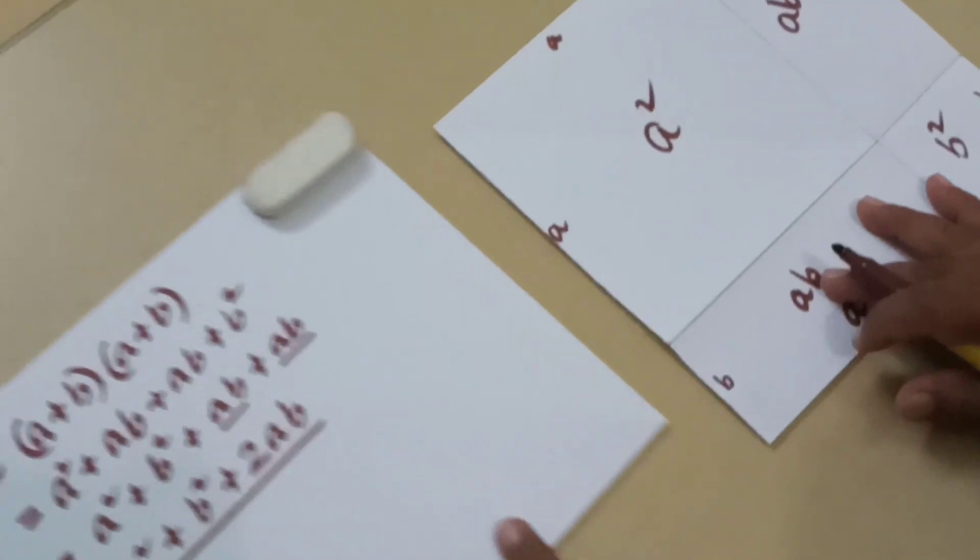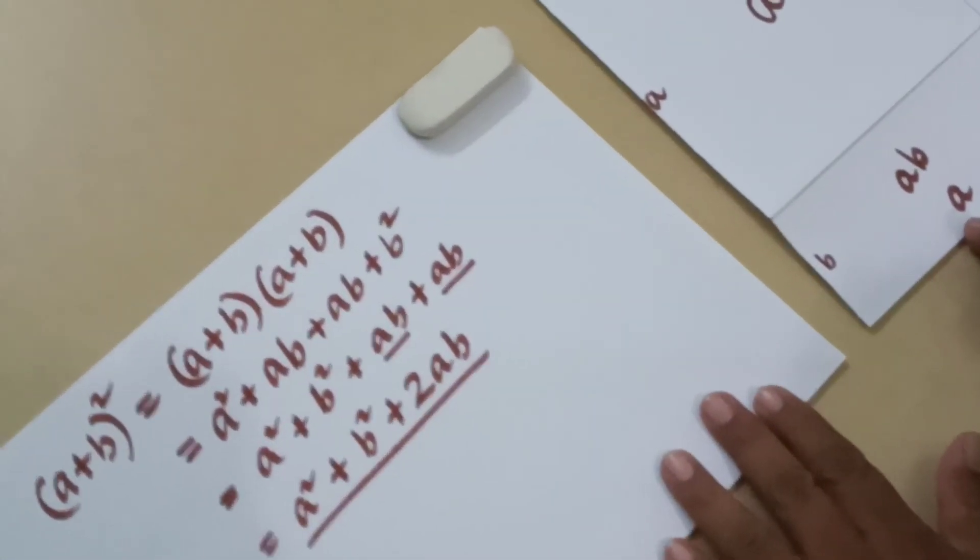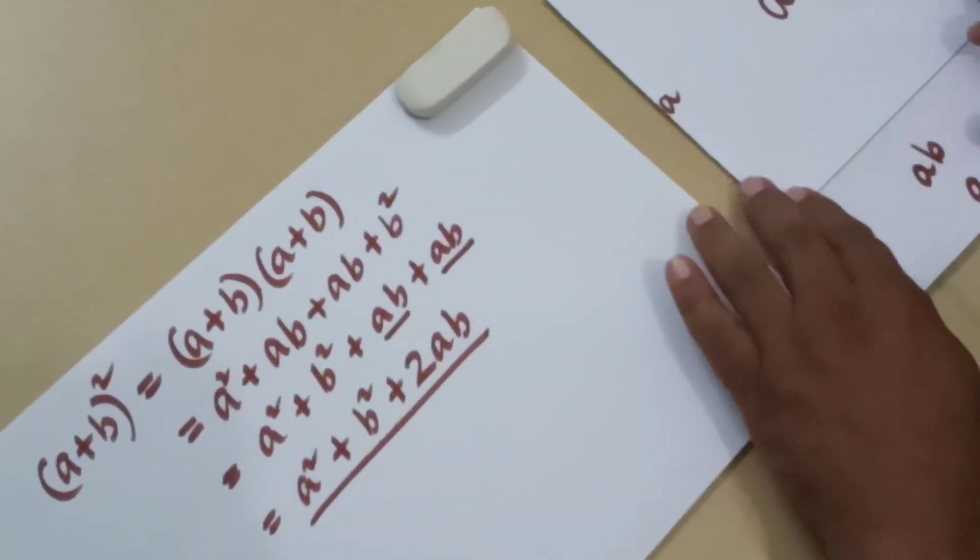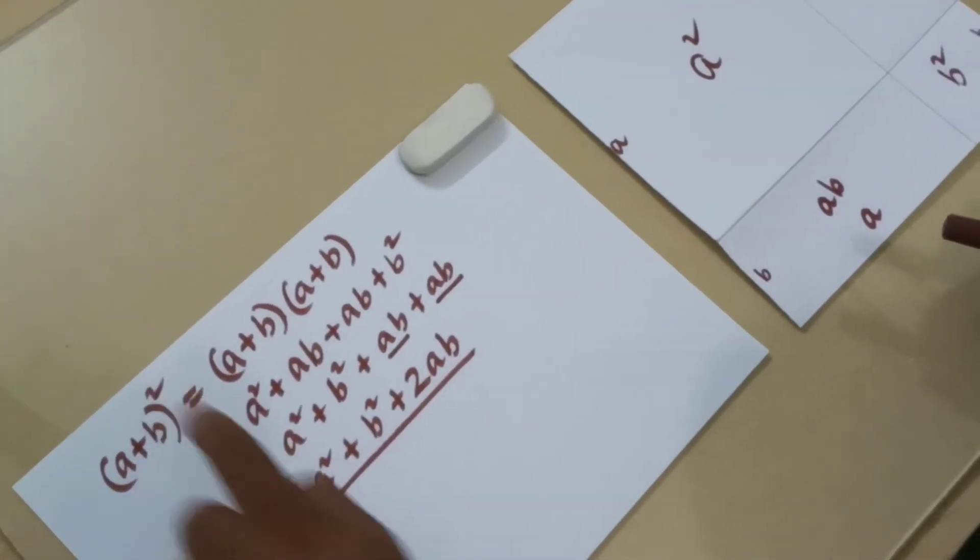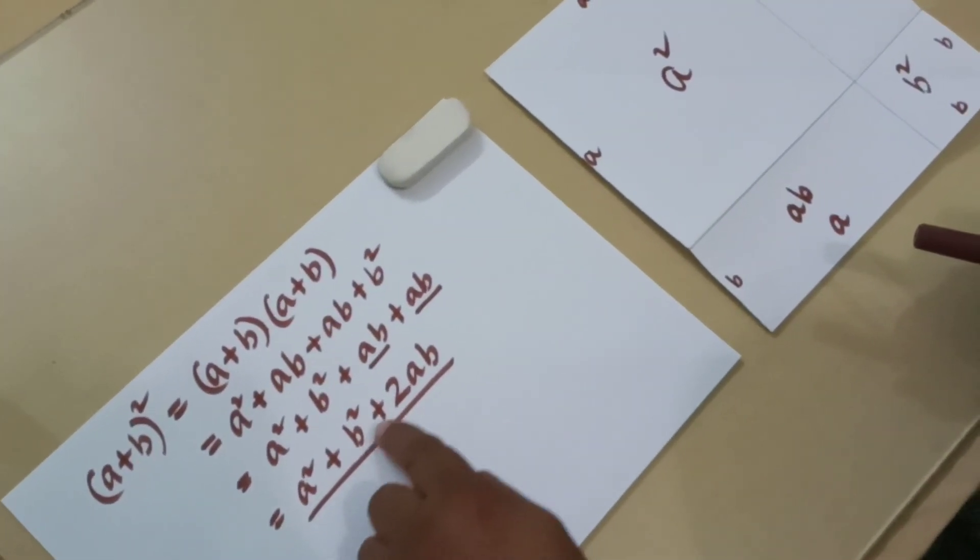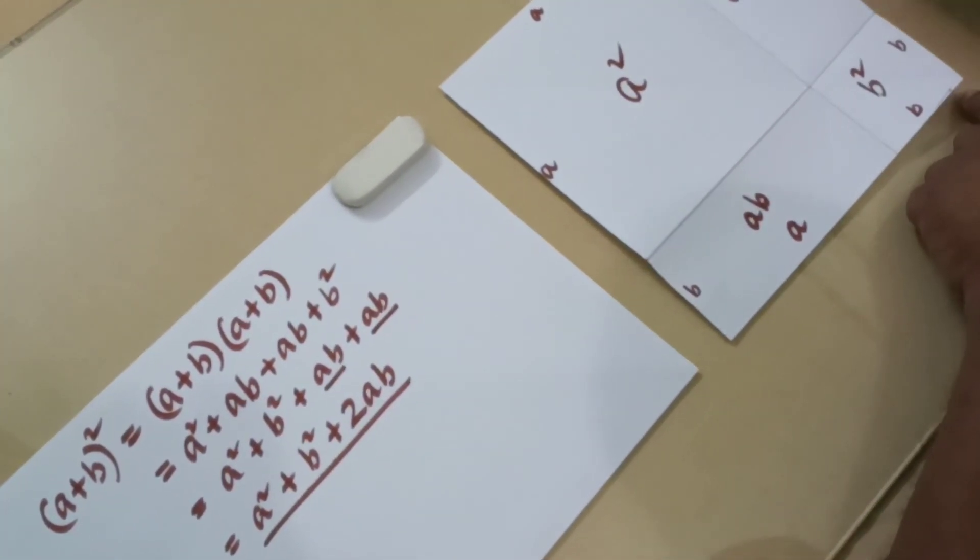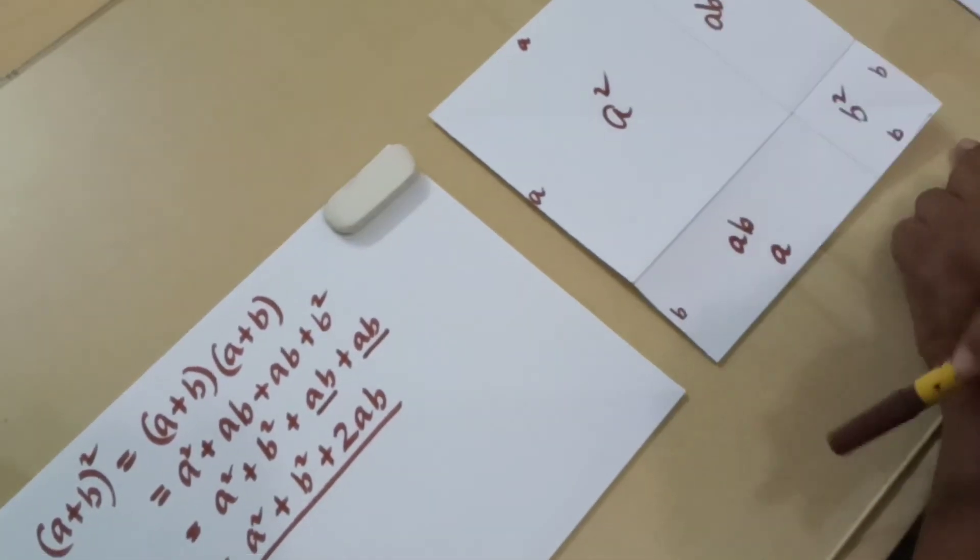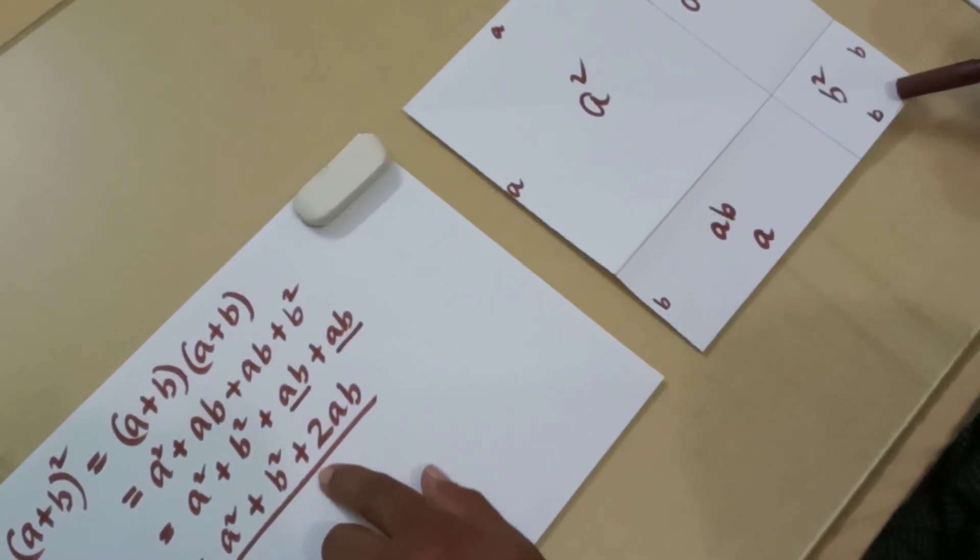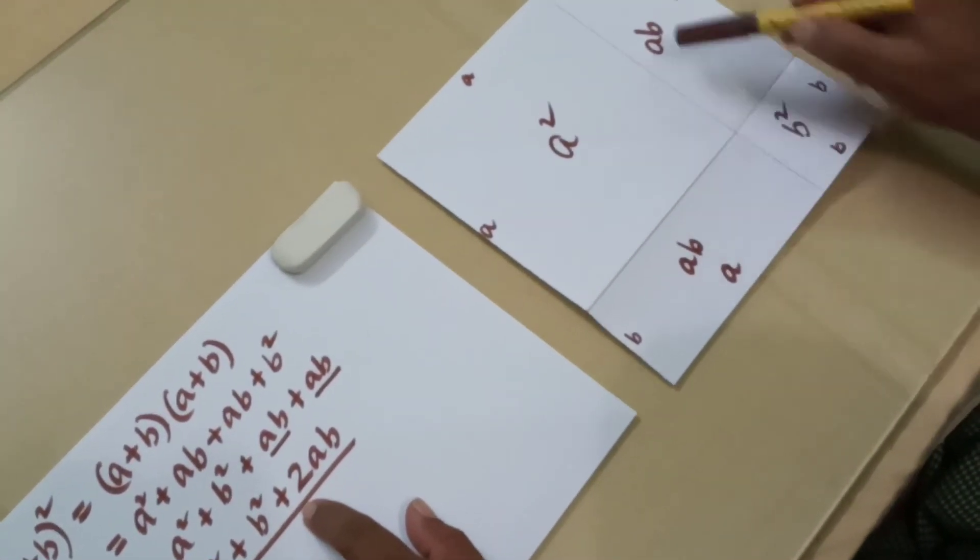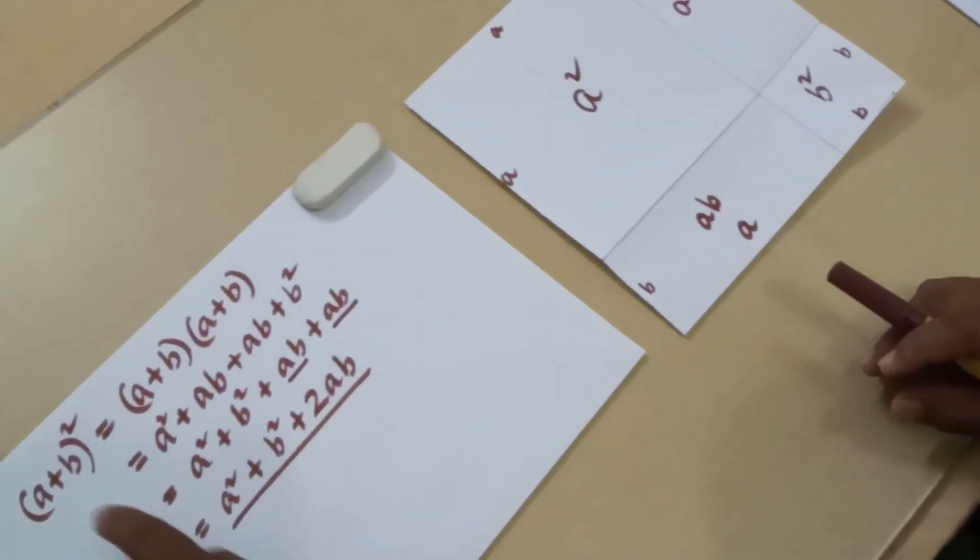So now we will go back to our a plus b whole squared algebraic expression and compare it with our geometry. So a plus b whole squared is a squared plus b squared plus 2ab. So that is the explanation for a plus b whole squared.